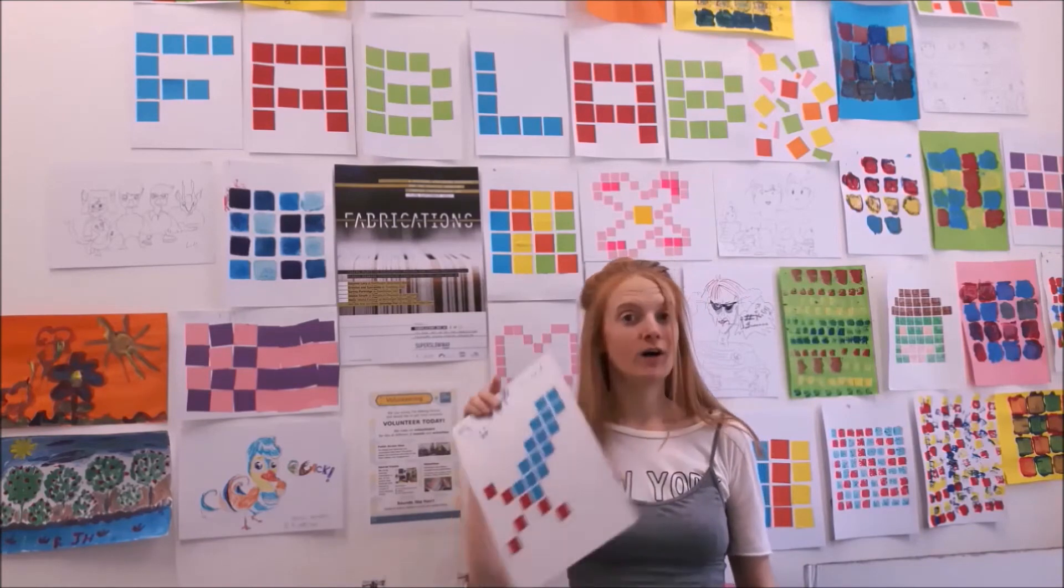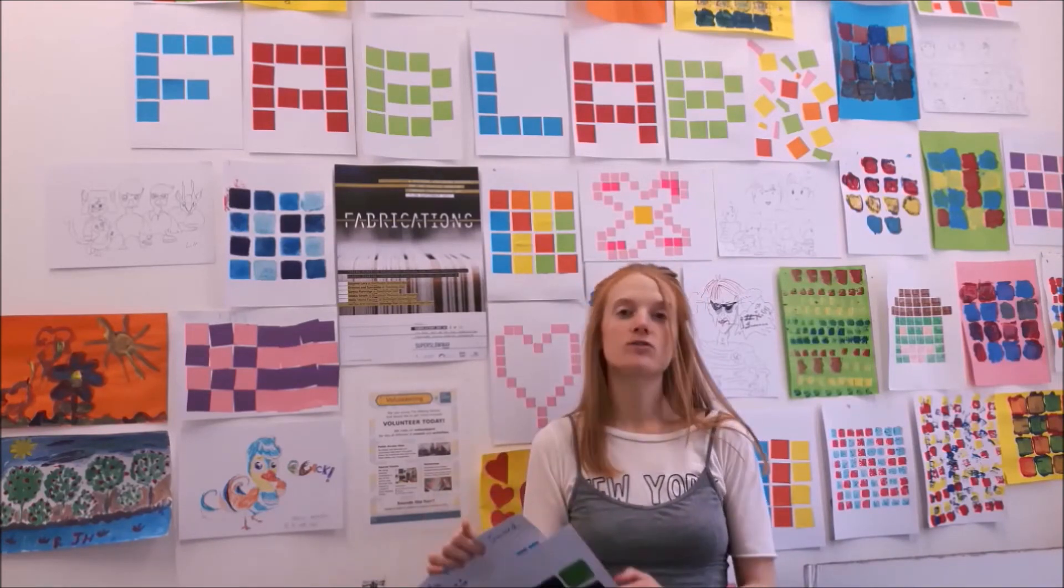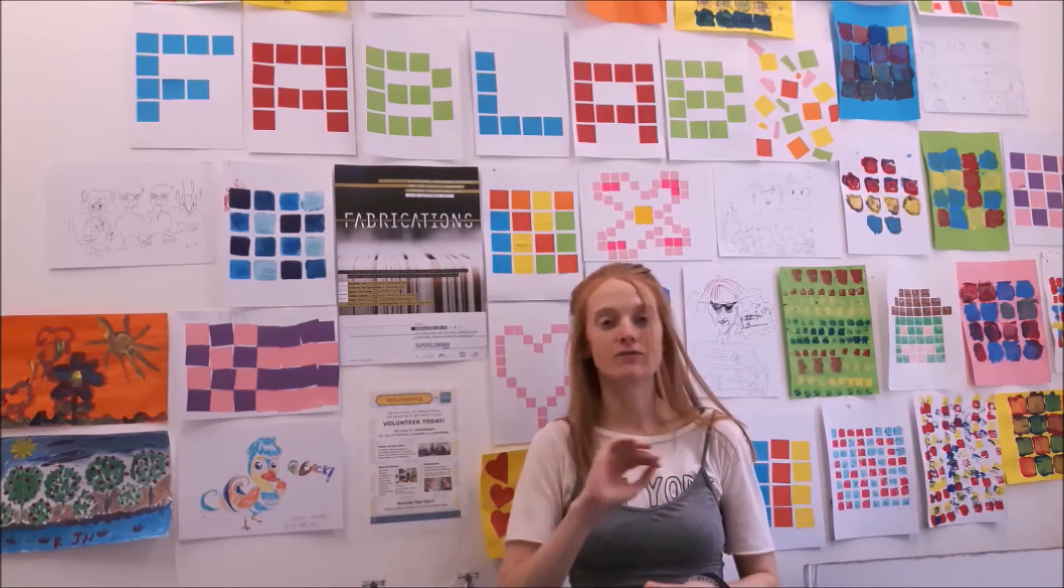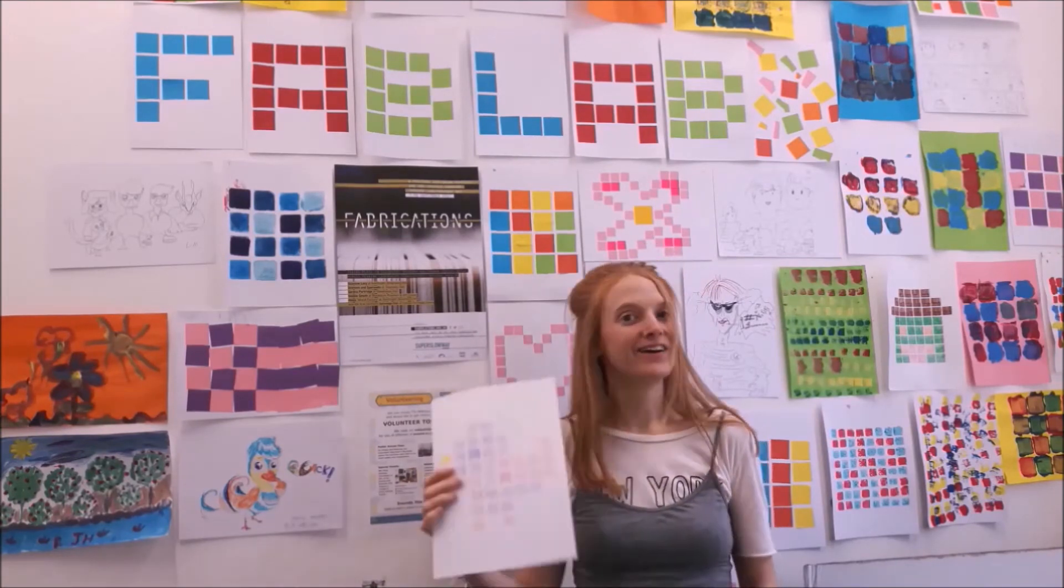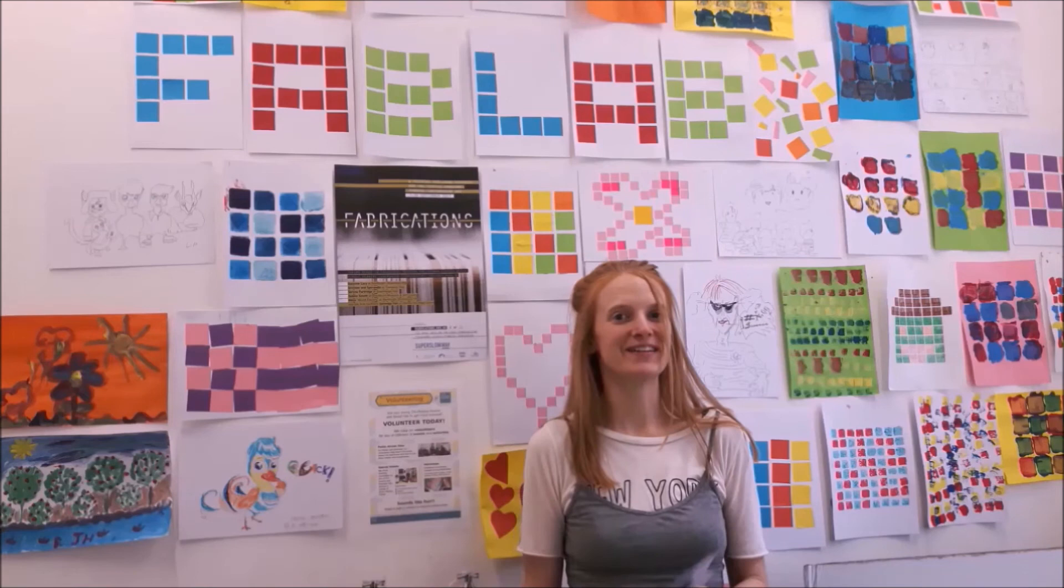You'll get a bunch of the squares and you'll also get some colored paper that we haven't already cut into squares so you can do some extra if you'd like. And then coloring pencils and crayons you'll have to get yourself.